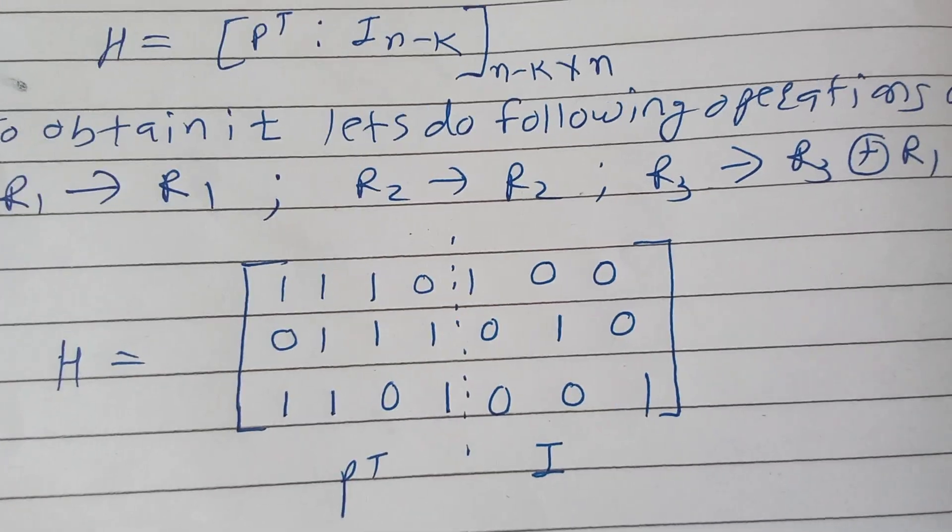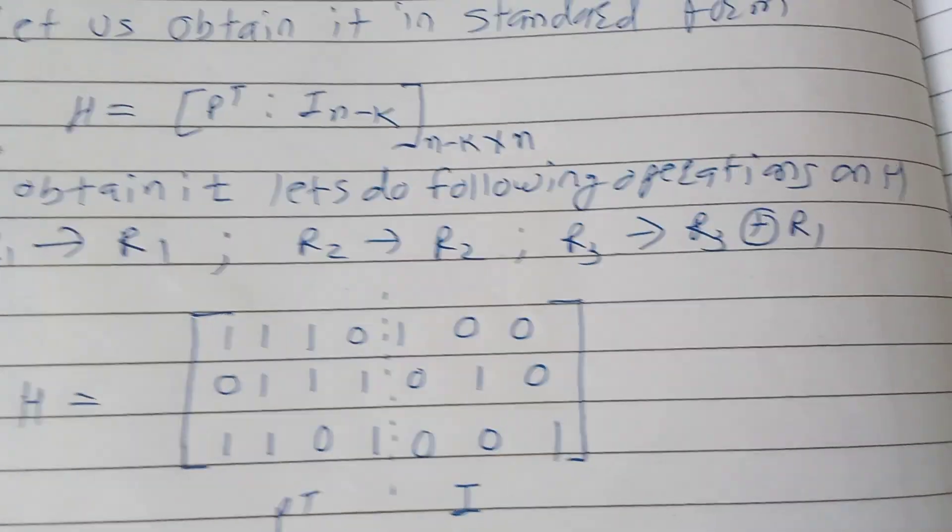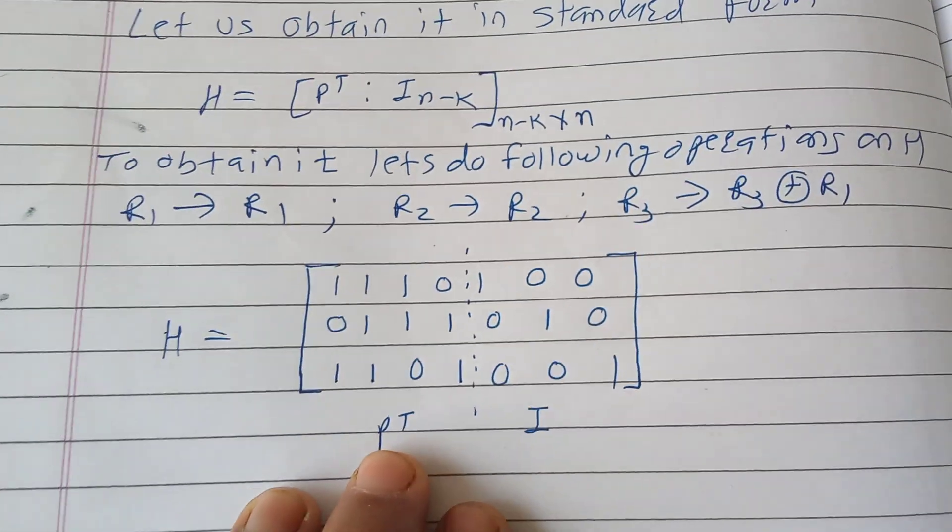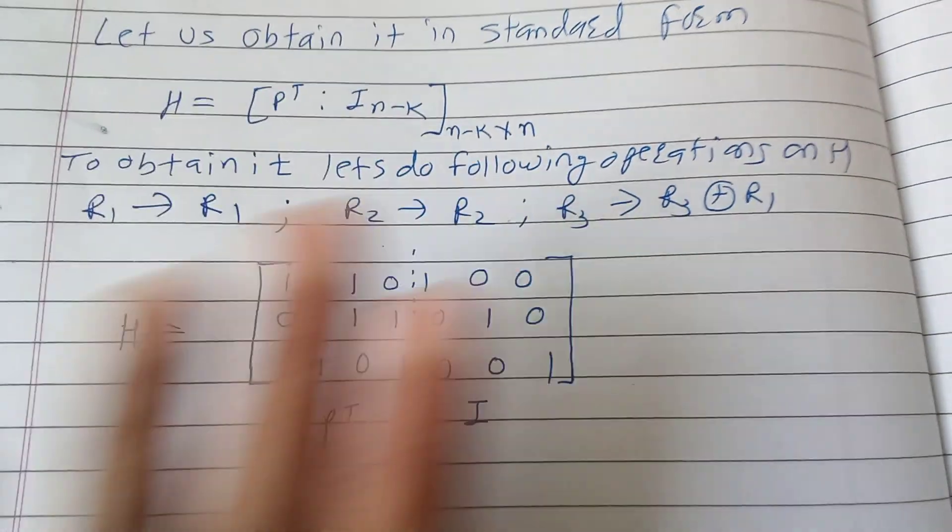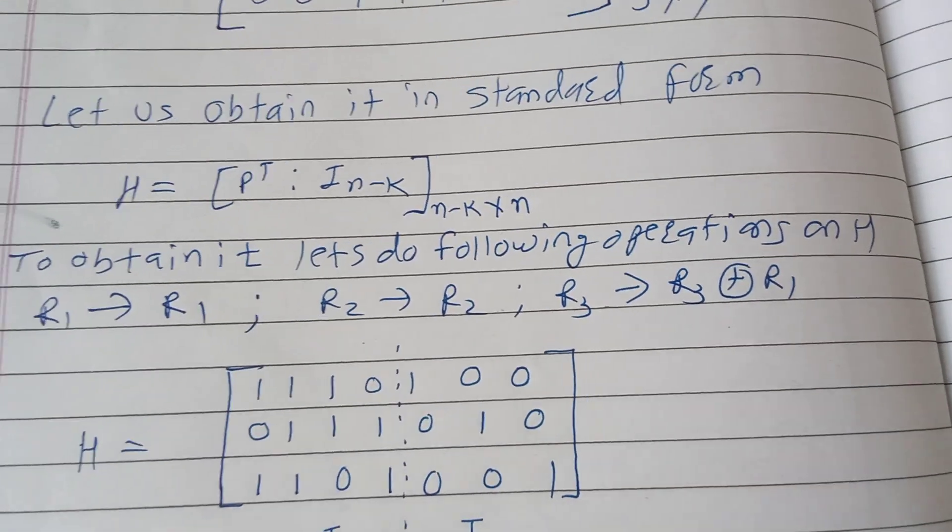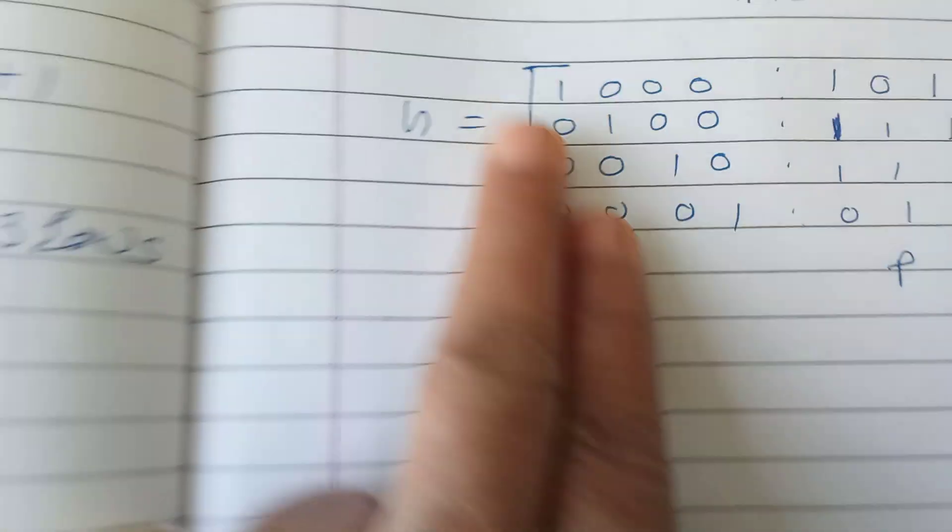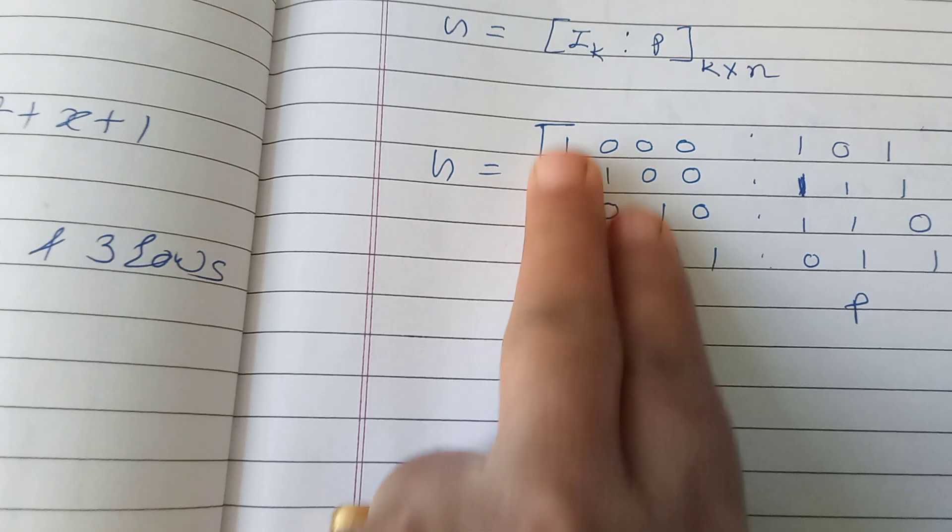That is P transpose into identity. Now how to obtain generator matrix from this? Generator matrix has the form IK in the first - IK and then P. So IK means 4 by 4 identity matrix. So form the 4 by 4 identity matrix, this one.